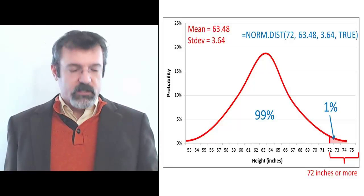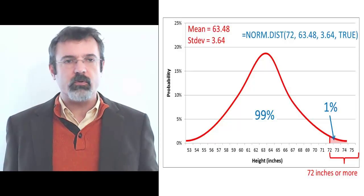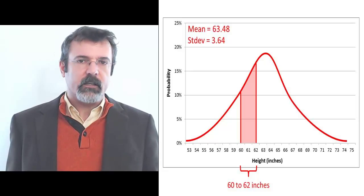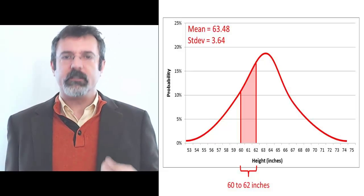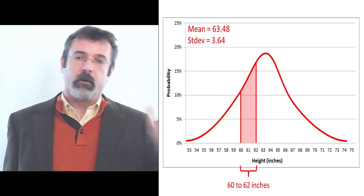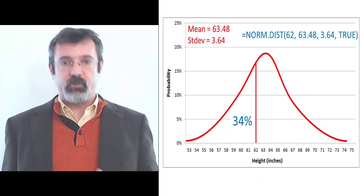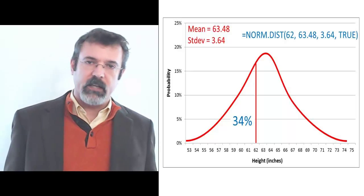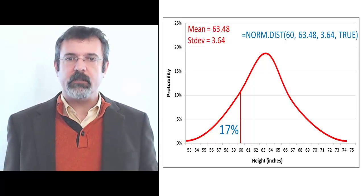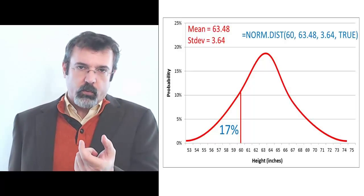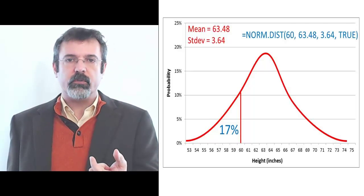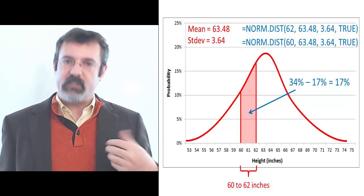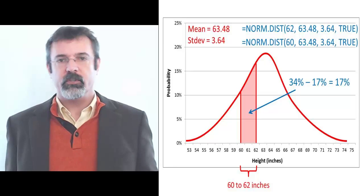Suppose we want to find the proportion of students who are between 60 inches and 62 inches tall. We use the NORM.DIST function to measure the area from the left up to 62 inches — that area is 34%. We then use NORM.DIST to measure the area from the left up to 60 inches — that area is 17%. The area we're concerned with is the difference: 34% minus 17%, or 17%. So we conclude that 17% of students are between 60 and 62 inches tall.